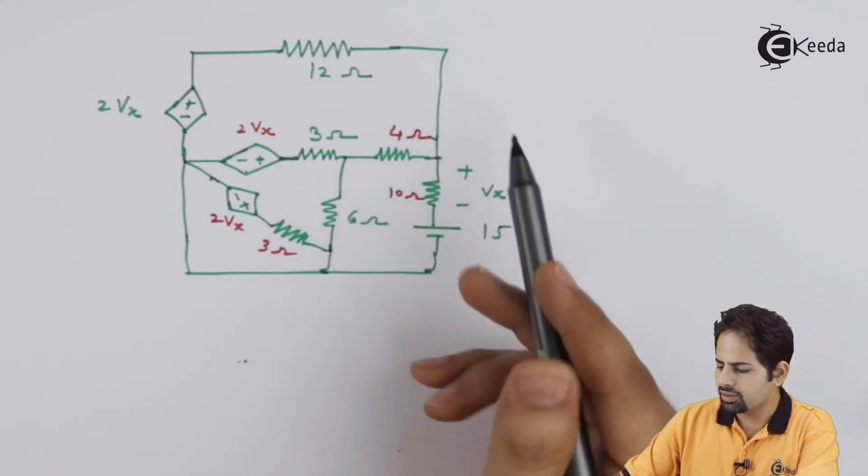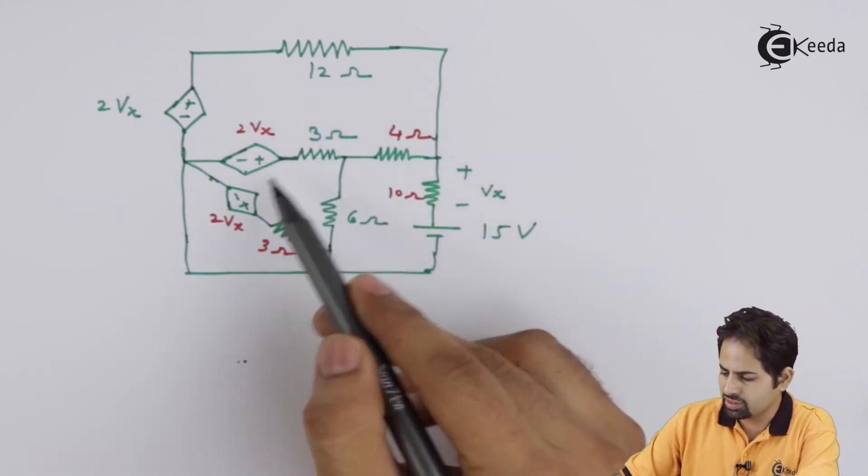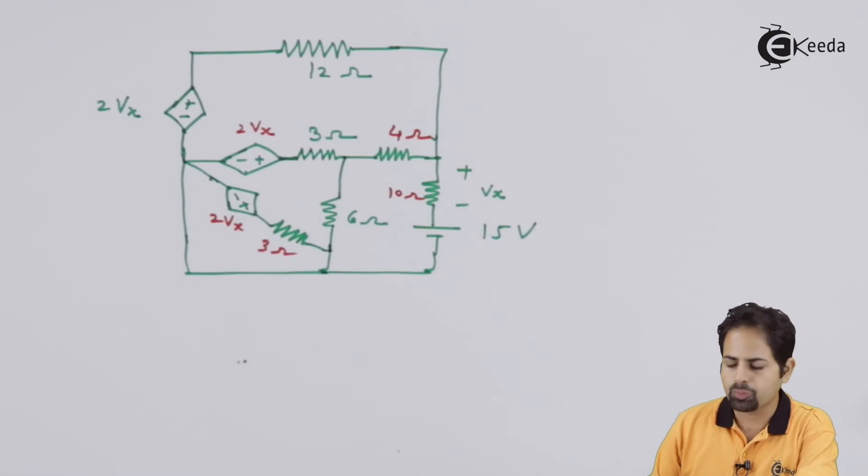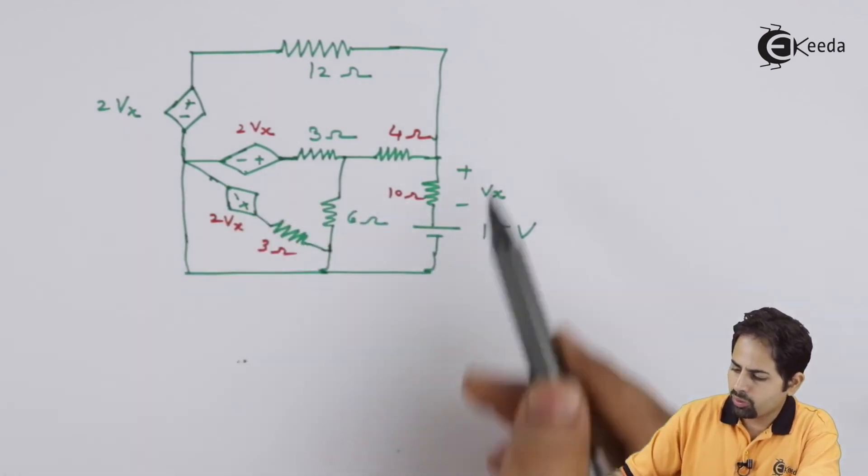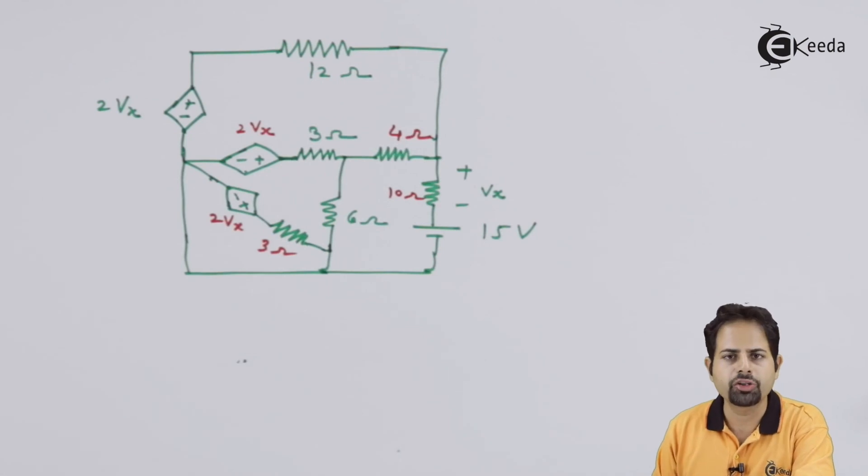Now it is not difficult to solve this. Suppose we want to get current through any loop. What we will do? We will apply mesh analysis through this loop, this loop and this loop as well as this loop. So that is not our question right now. So by doing this source shifting, we have made this problem in such a way that it can be solved very easily. So that is the end of this video.